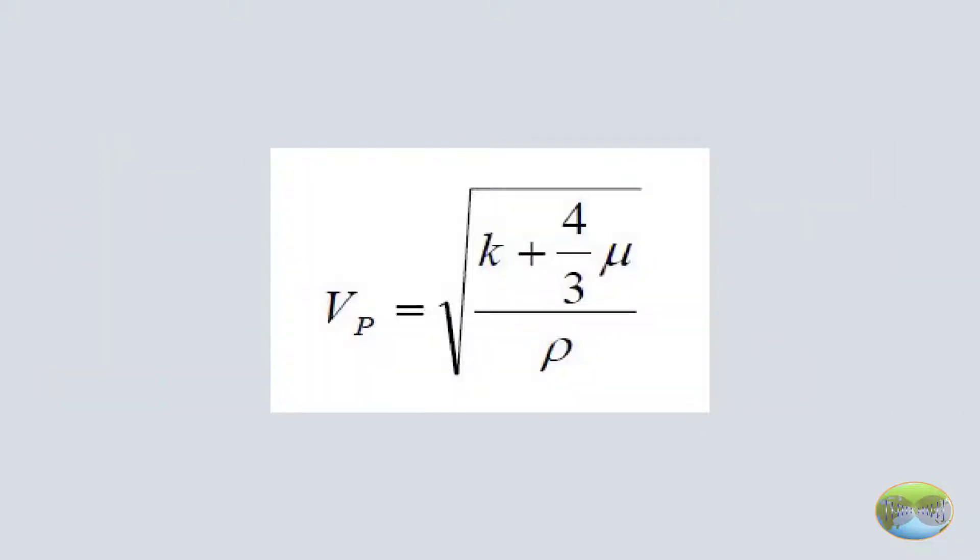P-wave velocity is defined by a formula as appears on your screen. Vp is equal to square root of bulk modulus plus 4 over 3 shear modulus divided by density.